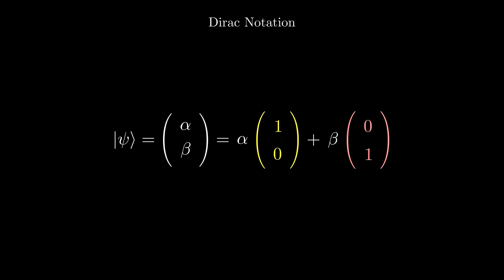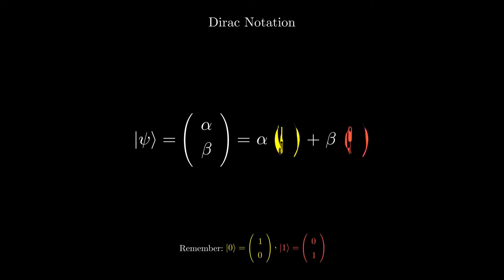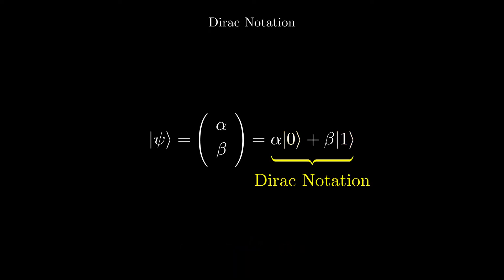Now, if you look at the column vectors, they are the zero and one states as we saw in the previous lesson. This gives us a linear combination of the zero and one states.